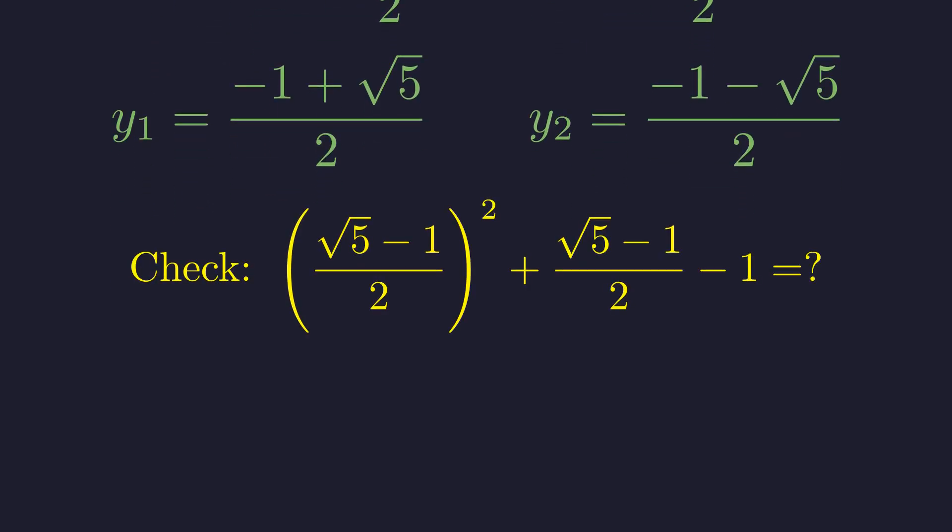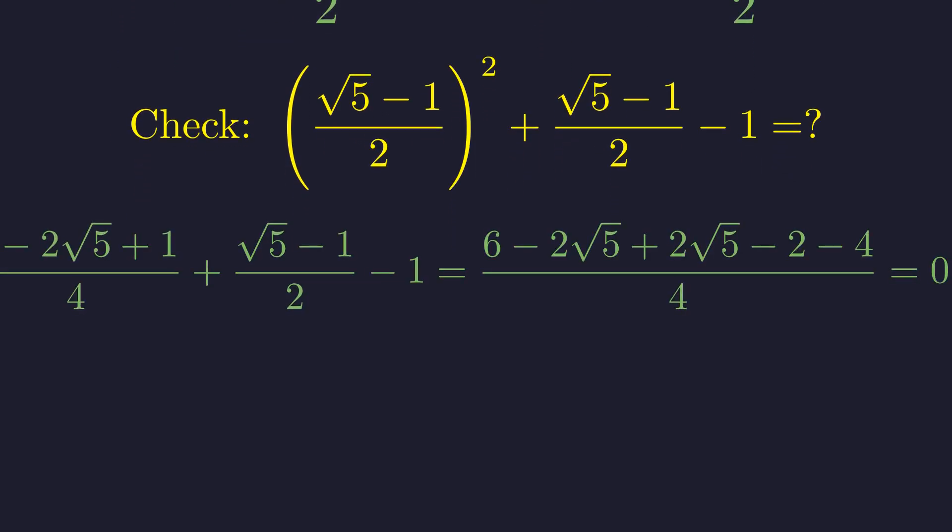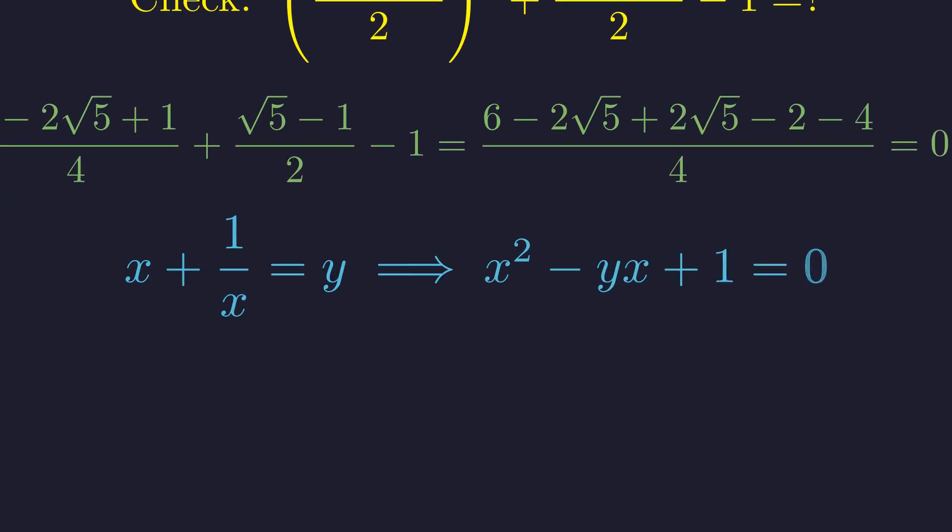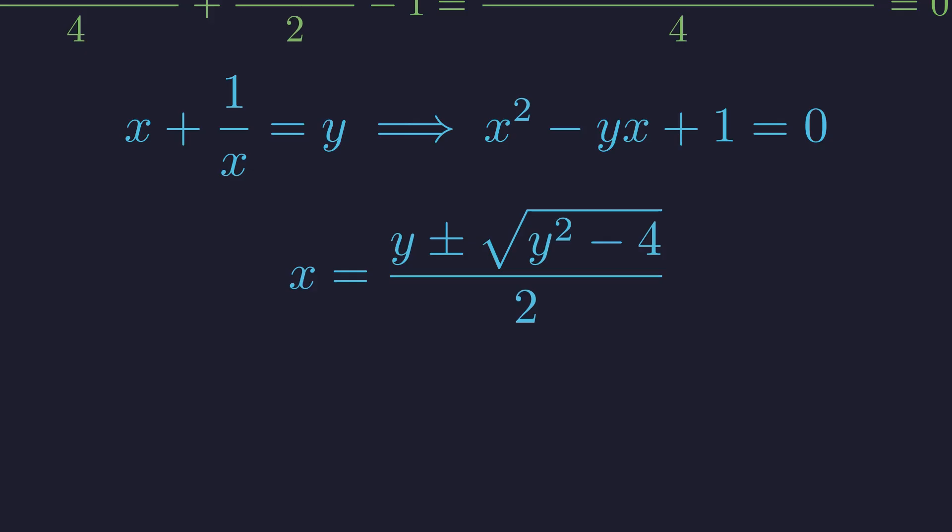Let's verify our golden ratio connection by substituting back into our quadratic equation. Perfect. The algebra confirms our solution is correct. Multiplying through by x and rearranging we get a quadratic equation in x for each value of y. The quadratic formula gives us this expression. Each y value will produce two x values giving us our four complex roots. This completes our algebraic journey. We found the same roots through pure symbol manipulation. But now, let's investigate something that seems completely unrelated.